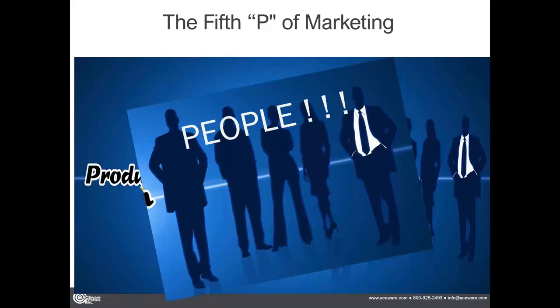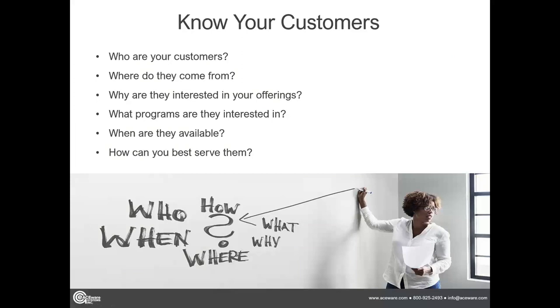Any of you marketers know that your best customer is your existing customer — the people whom you've already served, who hopefully like your product and are coming back for more. You talk about the Pareto rule: basically 20% of your customers will give you 80% of your revenue. So how do you get to know who your students are, and how can you better serve them? How do you know where they are, what programs they want, timing of availability?